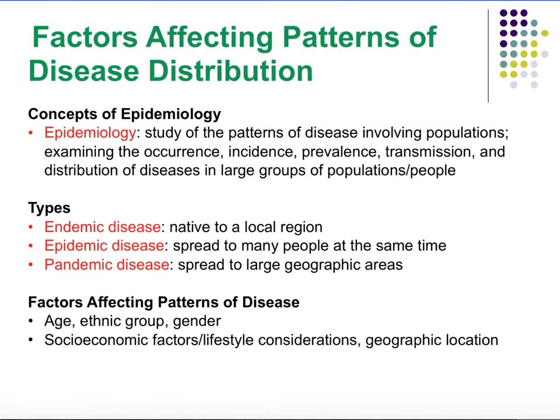Factors affecting patterns of disease distribution: let's look at concepts of epidemiology. Epidemiology is the study of the patterns of disease involving a population — examining the occurrence of the disease, incidence, prevalence, how it's transmitted, and how it's distributed. A great example of epidemiology is what happened with the Zika virus. Epidemiologists had to come and study how the disease initially started and how it was spreading from person to person, to combat it, prevent it from continuing to spread, and determine the best course of treatment.